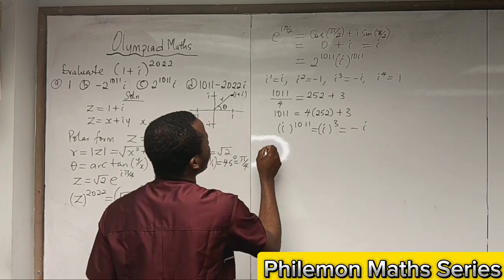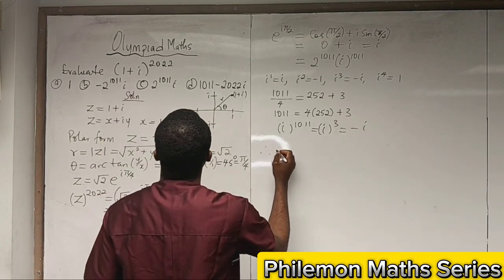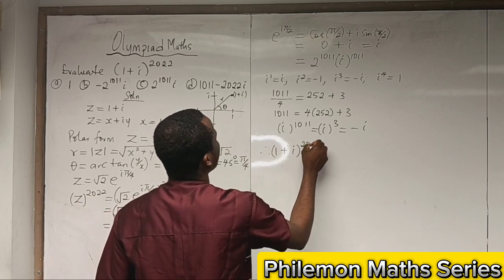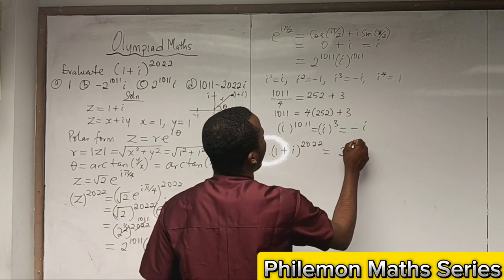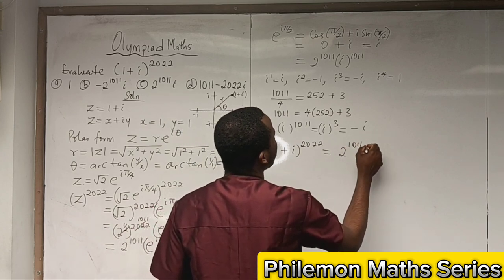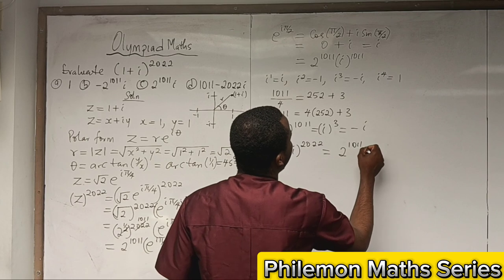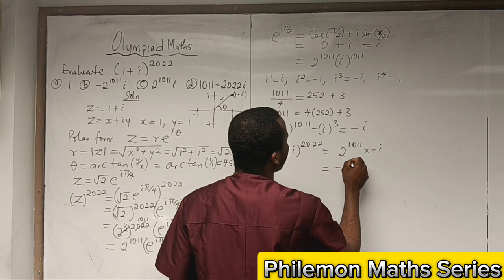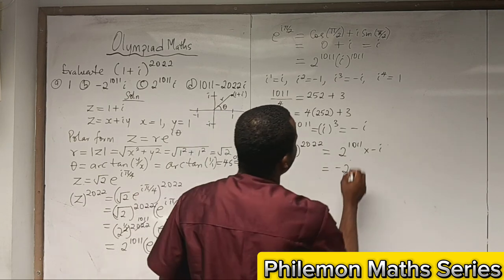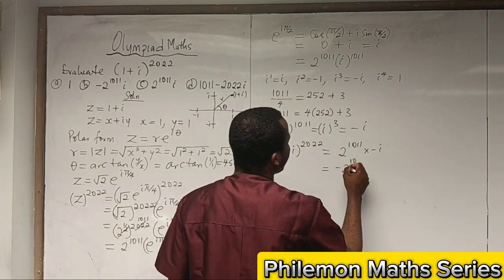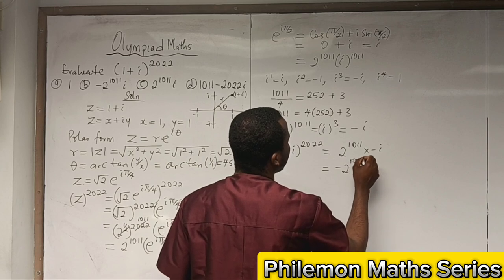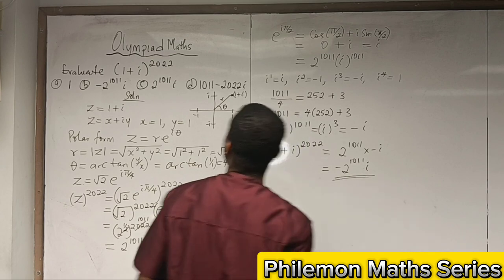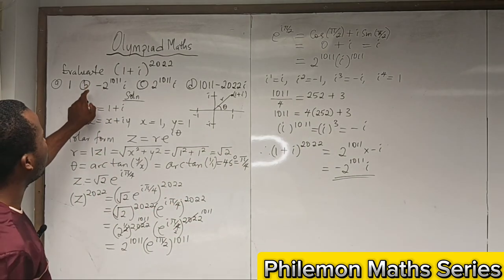Therefore, (1 + i)^2022 will be 2^1011 times -i, which will be -2^1011 * i. This is the correct answer, which is B.